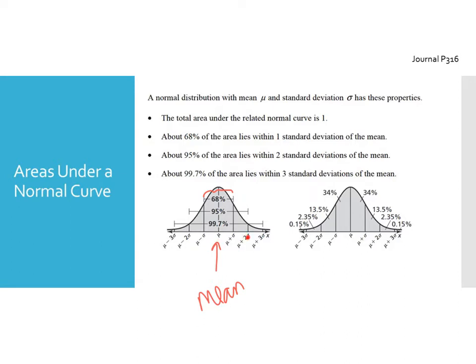If you take your mean and add or subtract two standard deviations, then 95% of your data should fall in that range. If you go three standard deviations out, you get 99.7% of your data. Outside both ends you have 0.15% that lies outside of three standard deviations. That is what we call a normal distribution, and we can use this to find the probability that something will land in a certain area. This is on page 316 of your journal — definitely bookmark that picture.